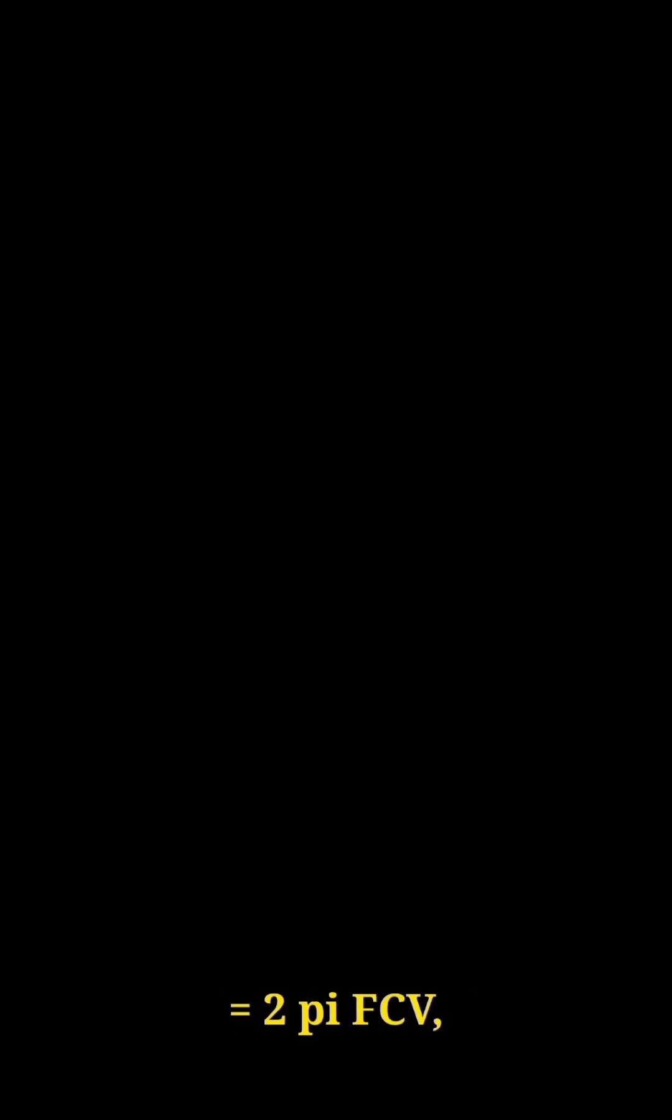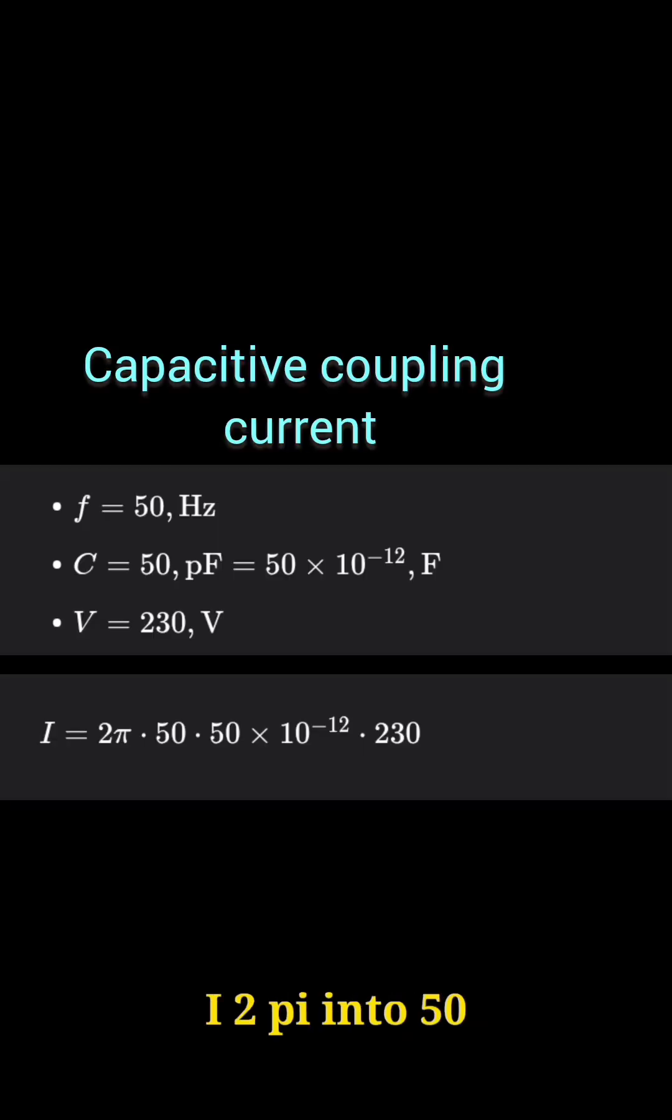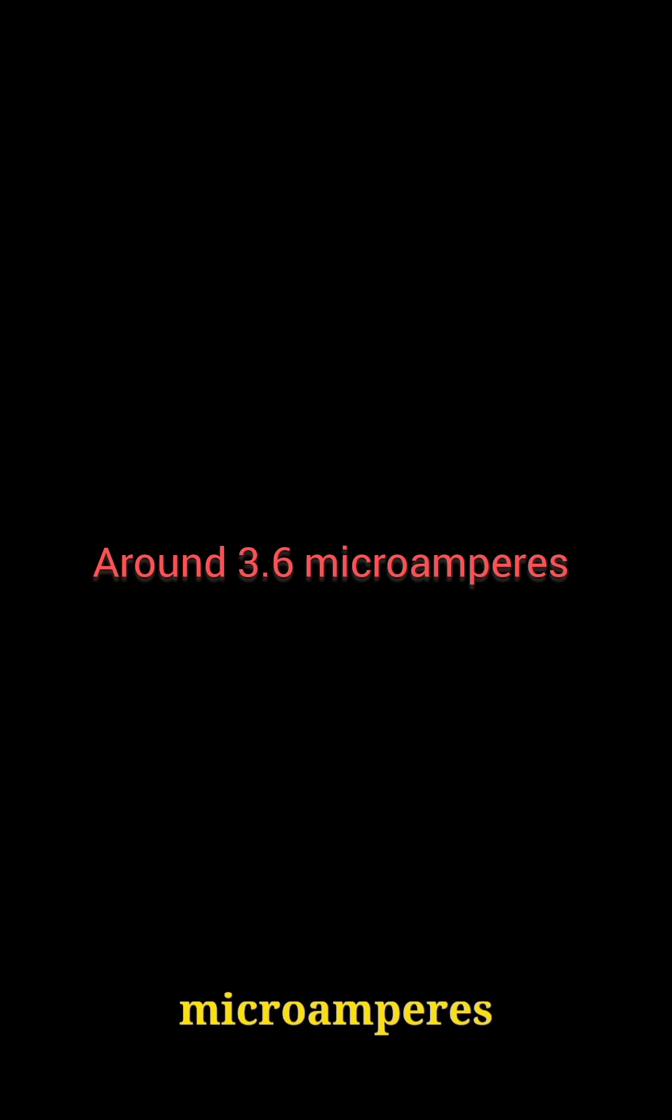Using the formula I equals 2πFCV and putting in the values, we get I equals 2π times 50 times 50 times 10^-12 times 230. This gives around 3.6 microamperes of displacement current, which is very tiny. But if there is no proper grounding, it builds up on the body and discharges through you.